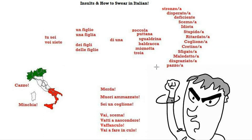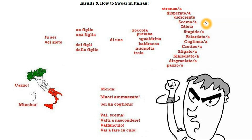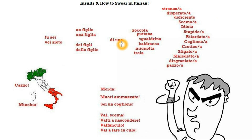After 'tu sei' you can use any of these adjectives — they are all insults. 'Idiota' means idiot. 'Stupido' means stupid. As you can see, apart from one particular case, you have to swap the final 'o' with an 'a' if you're insulting a woman, because that makes the adjective feminine. So 'stupido' is for a man, and 'stupida' is for a woman. For example, 'tu sei una stupida' means 'you are stupid,' said to a woman.